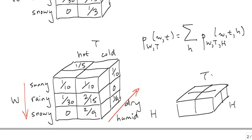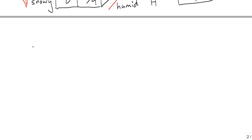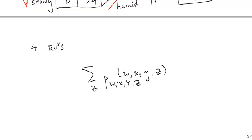Hopefully you see the general pattern even if we had four random variables. For example, P W, X, Y, Z of W, X, Y, Z. If we, for example, wanted the distribution for W, X, and Y, then we would marginalize out Z, and this would give us W, X, Y here.